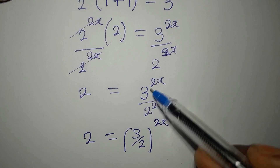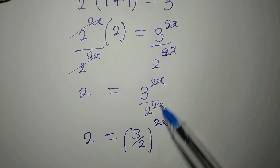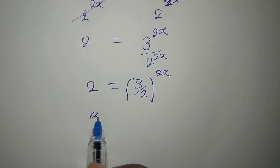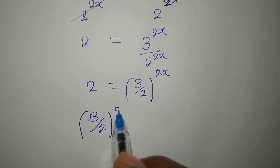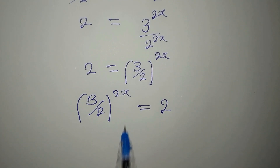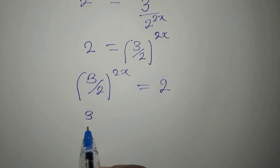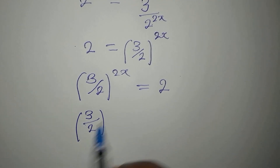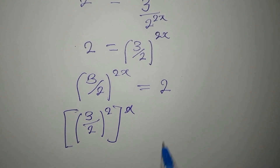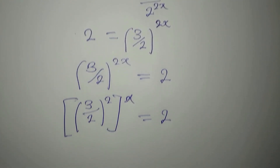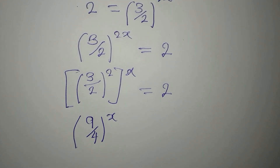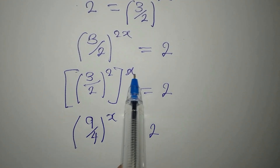3 over 2 will be raised to the power of 2x. Writing this on the other side, we have 3 over 2 to the power of 2x equals 2. This can also be written as 3 over 2 to the power of 2 to the power of x, which equals 2. Opening this bracket gives us 9 over 4 to the power of x equal to 2.